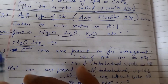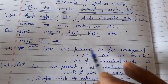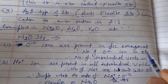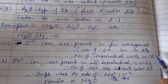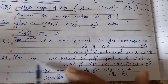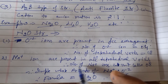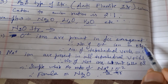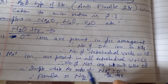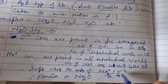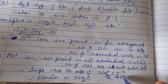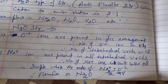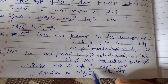For the structure of sodium oxide: the negative oxide ions are present in FCC arrangement, so the number of oxide ions in the unit cell is four. The number of tetrahedral voids is double, giving eight. Sodium ions are present in all eight tetrahedral voids, so the number of sodium ions in the unit cell is eight. The simple whole number ratio of sodium to oxide ion is 8:4, which cancels to 2:1. Therefore the formula of the compound is Na₂O — two sodium ions per one oxide ion.